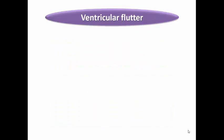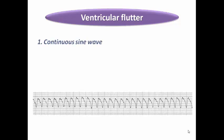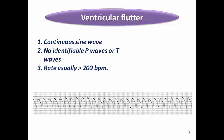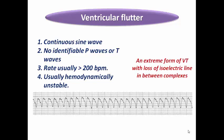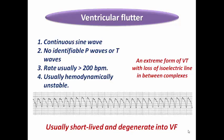Ventricular flutter is a malignant form of VT showing a continuous sine-wave pattern with no identifiable QRS or T waves, rate more than 200 bpm, and loss of the isoelectric line between complexes — similar to how atrial flutter loses isoelectric baseline between flutter waves. It is hemodynamically unstable and mostly requires urgent DC shock. It is usually short-lived and degenerates to VF.